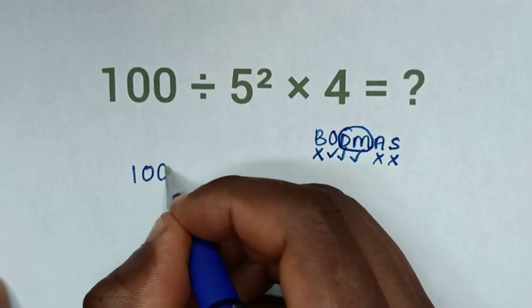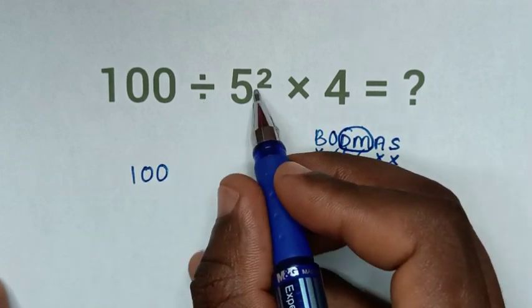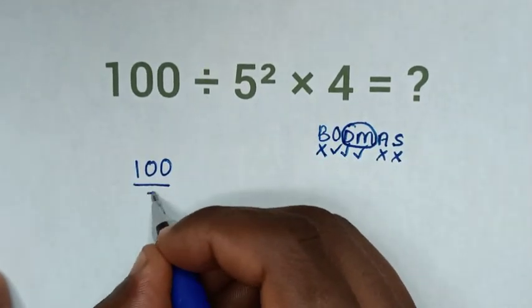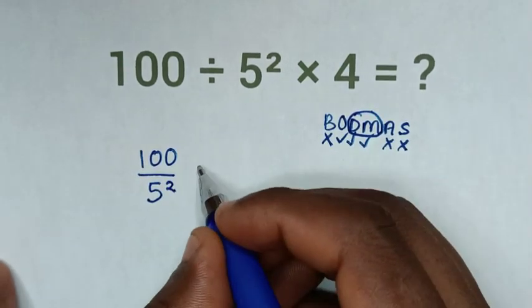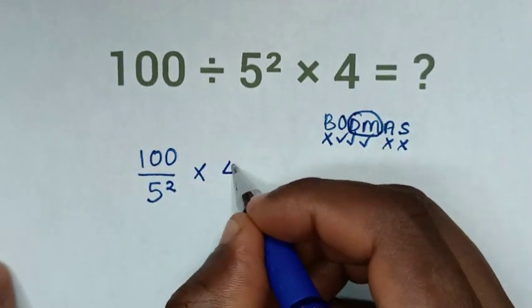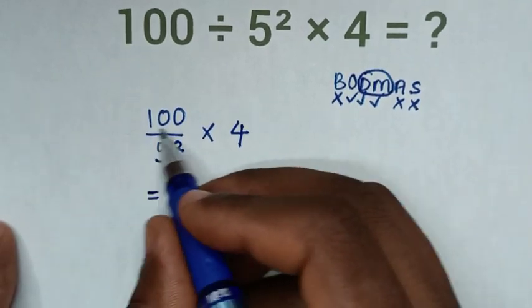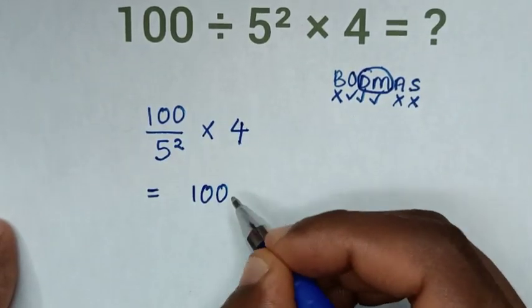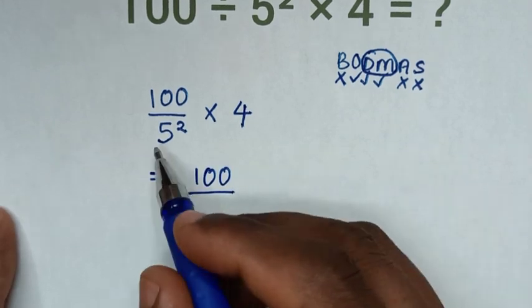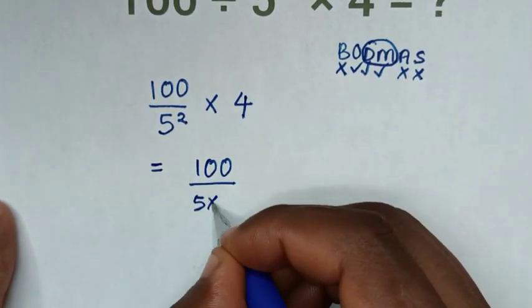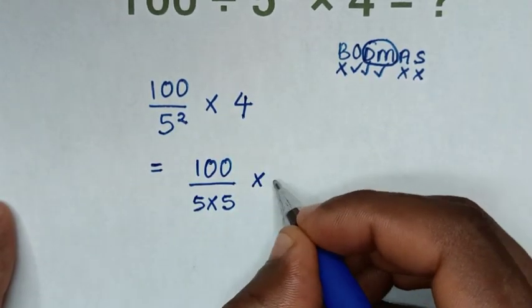Then from division, it will be 100 divided by 5 square is same as over 5 square, then times this 4. Then it will be equal to 100 over 5 square is same as 5 times 5, then times 4.